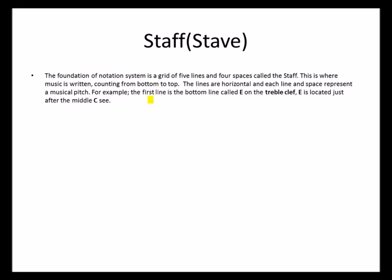The foundation of a notation system is a grid of five lines and four spaces called the staff. This is where music is written — where we notate notes. From bottom to top, the lines are horizontal, and each line and space represents a musical pitch.